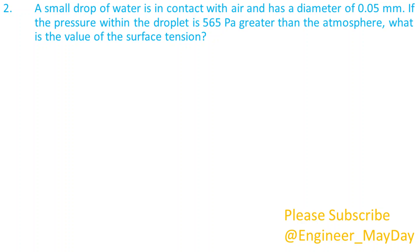Here is a second question. A small drop of water is in contact with air and has a diameter of 0.05 millimeters. If the pressure within the droplet is 565 pascals greater than the atmosphere, what is the value of the surface tension?